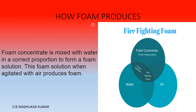Here you can see how foam is produced — the production of foam. This is a very nice pictorial representation. You have foam concentrate, or the foam-making agent; another thing required is water; and then you have air. All three join together to make actual foam for fire fighting. Foam concentrate is mixed with water in the correct proportion to form a foam solution, and when this foam solution is agitated with air, it produces the foam.